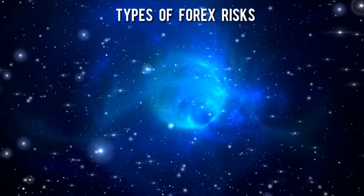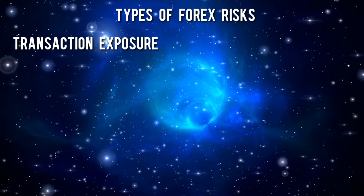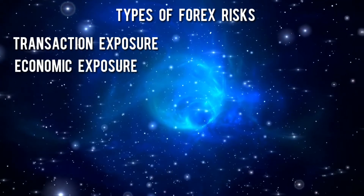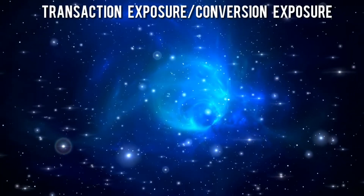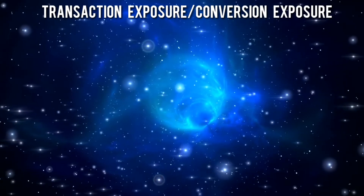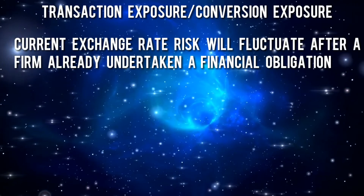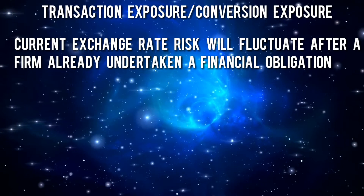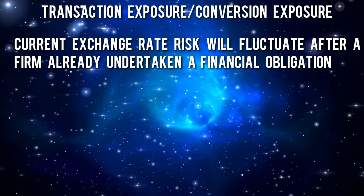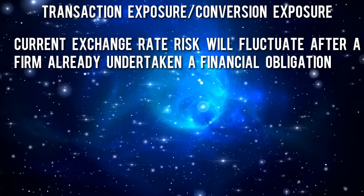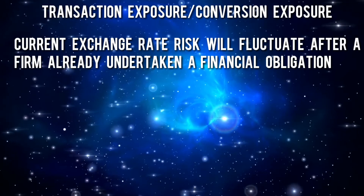Firms may be exposed to three types of foreign exchange risk: first, transaction risk; second, economic risk; and third, translation risk. Let's see what transaction risk or transaction exposure is — sometimes it's called conversion exposure. It is the risk that the current exchange rate will fluctuate after a firm has already undertaken a financial obligation. For example, a buyer agrees to buy a product using foreign currency; the risk comes if that currency should appreciate, and ultimately the buyer has to spend more than they had budgeted for the goods.